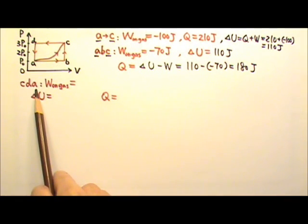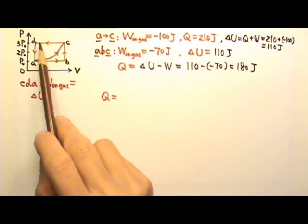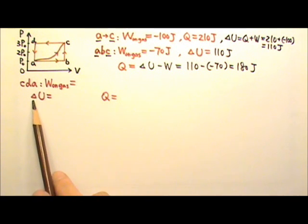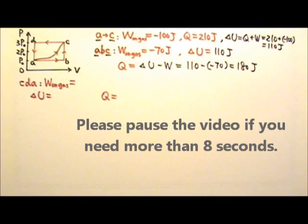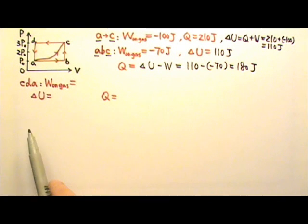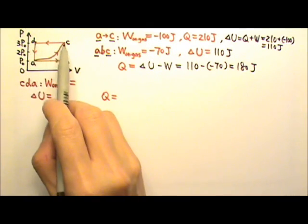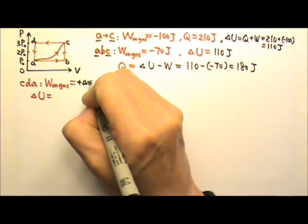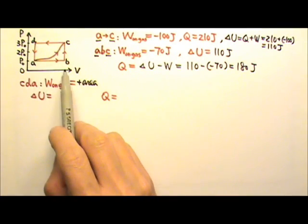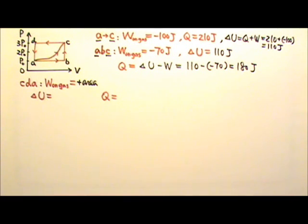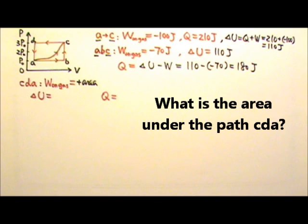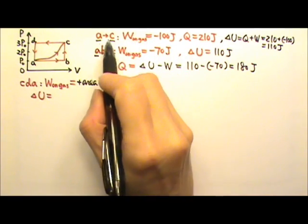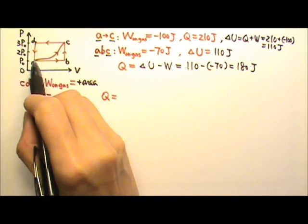If the gas is taken from C to A following path CDA, what is the work done on the gas, what is the internal energy change, and what is the heat added to the gas? The work done on the gas for CDA is the area under this graph. Because the volume decreases, the work is the positive area — the entire rectangle underneath.